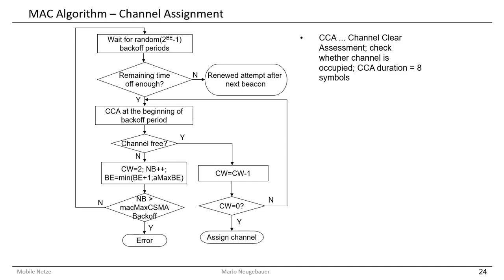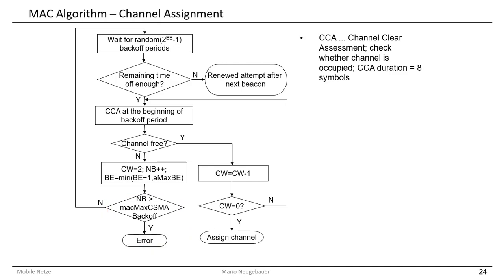To start over again, we assign fresh values to the contention window constant and re-initialize BE. We count how many backoffs have already occurred — how many times we found the channel busy and could not send. We increment NB, and if NB exceeds a certain maximum number of backoffs, we signal an error to the upper layer, informing it that it was not possible to send the message. The upper layer may then decide to try again in the next contention access period, perhaps with the next beacon.